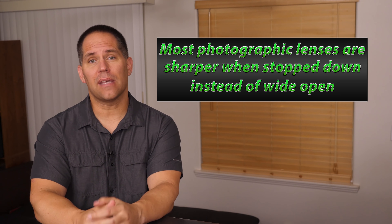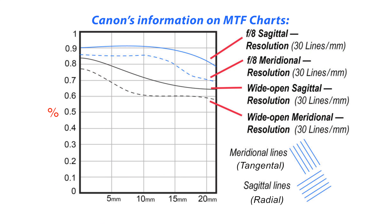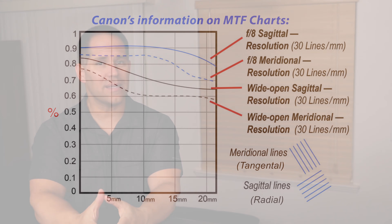If you look at the MTF charts that Canon publishes, they include a second set of lines showing how the resolving power increases when you're shooting at f/8. I always tell my students: use the best lens that you have for the job. If it's not sharp enough, stop it down. Consider your output media. And if it's still not enough, then would be the time to upgrade. But for the most part it's more about resolving power in relationship to the sensor being used.